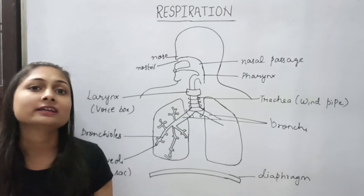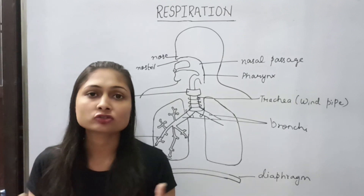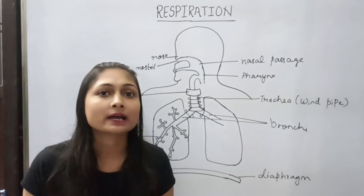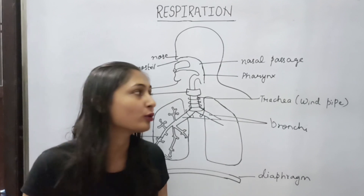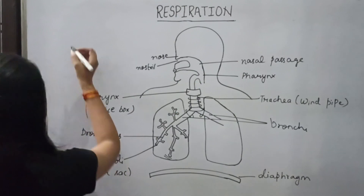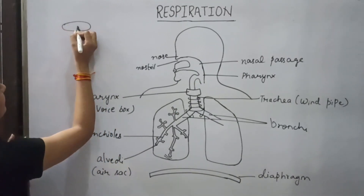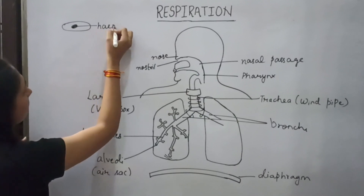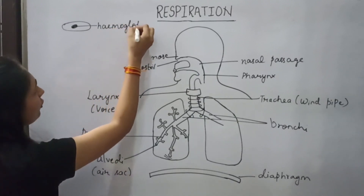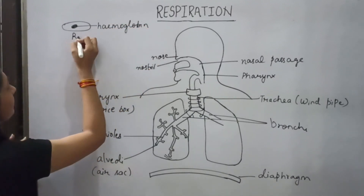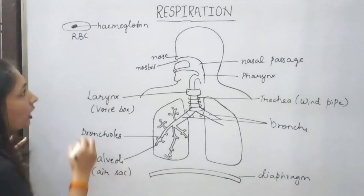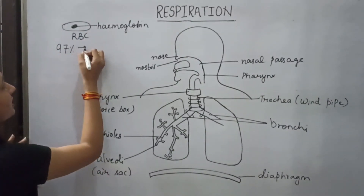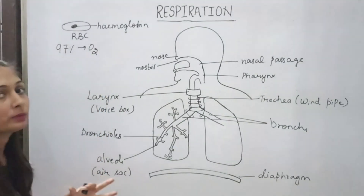Now we will talk about transportation of carbon dioxide and oxygen in the body. Oxygen is mainly transported with the help of a pigment called hemoglobin. RBCs, which are red blood cells, contain a pigment called hemoglobin. Hemoglobin is present in RBCs and is responsible for their red color. 97% of oxygen is transported around the body by hemoglobin.